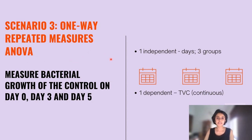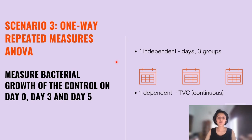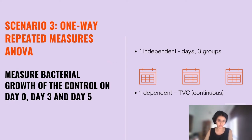LAERD Statistics has what's called a statistical test selector. If you know the kinds of variables you have and how many groups, you input all this data — it's kind of like a survey — and then they'll compute which is the most appropriate test for you to use, and then teach you how to do it as well.